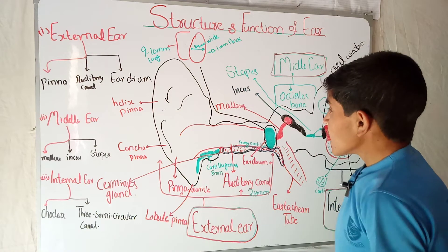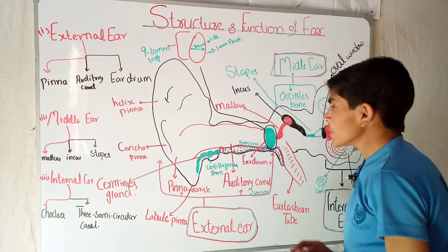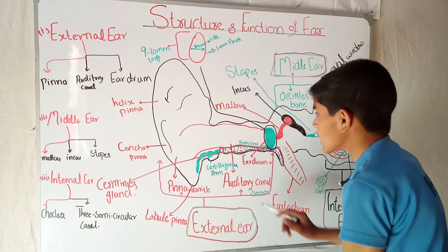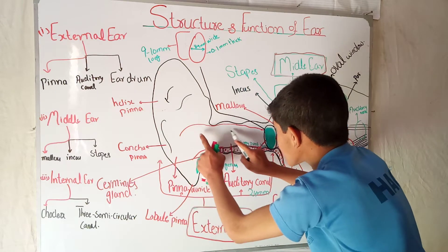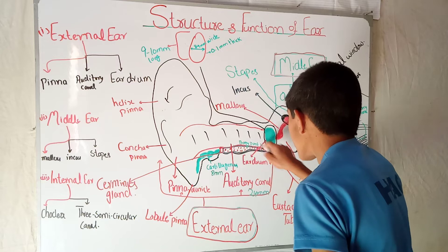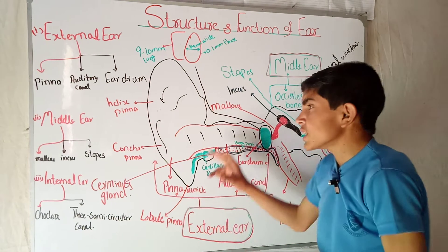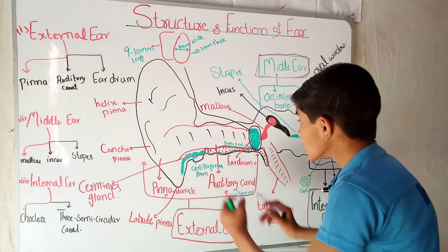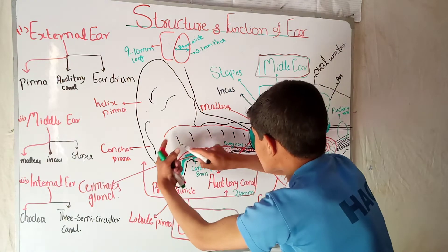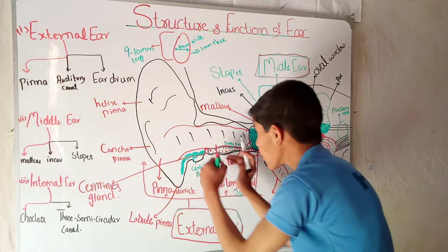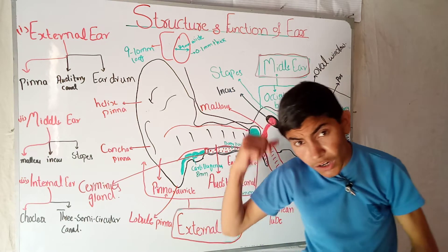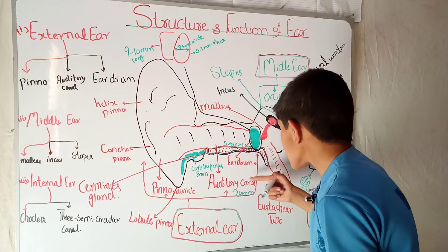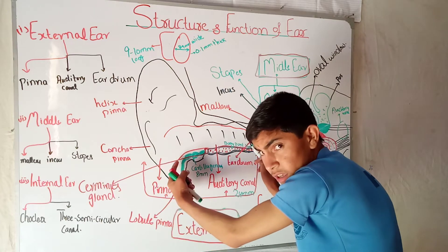Next is the auditory canal. The auditory canal starts from the concha pinna and goes to the middle ear. The auditory canal is about 24 millimeters long. The main part is called the auditory canal, and this entire 24-millimeter length extends from the opening to the eardrum.